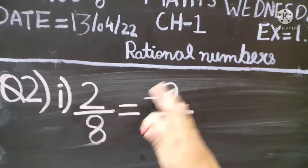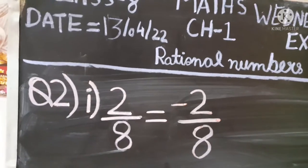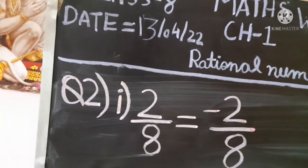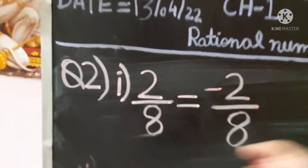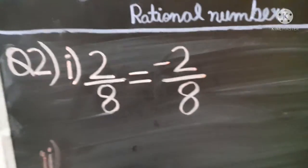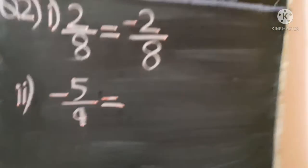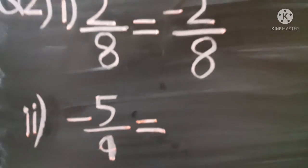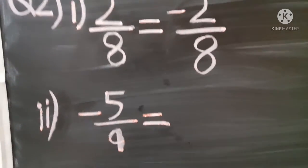Now let's come to the second part. The second part is minus 5 upon 9. It is in minus, and when converted to additive inverse form it will be converted to plus.